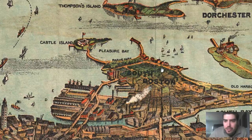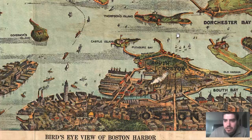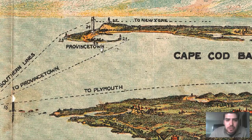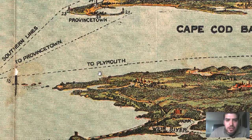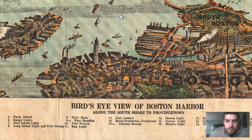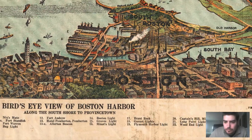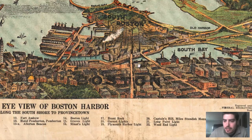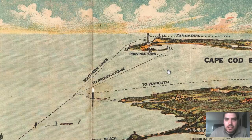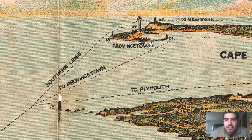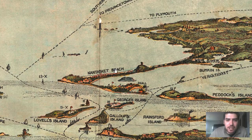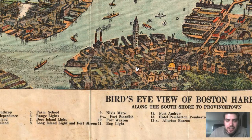Let's look up by Provincetown. There are the lighthouses: Wood End Light and Race Point Light — those are the lighthouses by Provincetown, isn't that cool? And then we've got number 16 right here, which looks like another light as well.